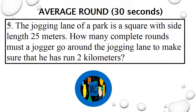Question 5. The jogging lane of a park is a square with side length 25 meters. How many complete rounds must a jogger go around the jogging lane to make sure that he has run 2 kilometers? Go! Question 5. The jogging lane of a park is a square with side length 25 meters. How many complete rounds must a jogger go around the jogging lane to make sure that he has run 2 kilometers? Go!